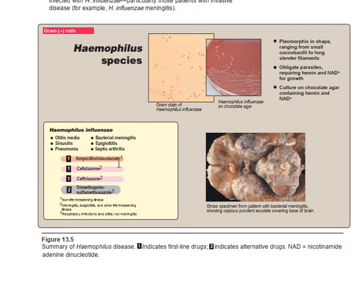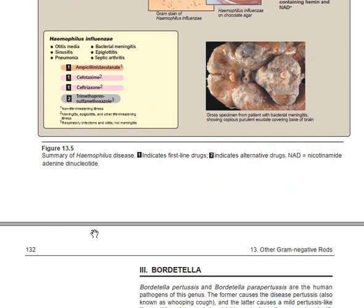If you don't want to use a beta-lactamase inhibitor, you can use a beta-lactam drug that is more resistant to beta-lactamase, such as a cephalosporin — for example, third-generation cephalosporins like cefotaxime. If you don't use the beta-lactamase inhibitor, the second-line drugs used in Haemophilus species are trimethoprim and cefotaxime.